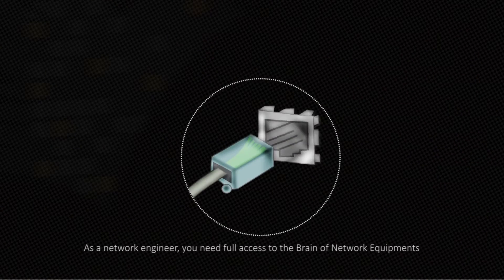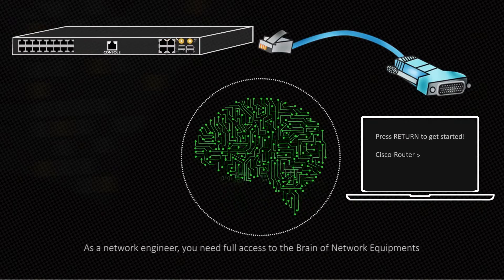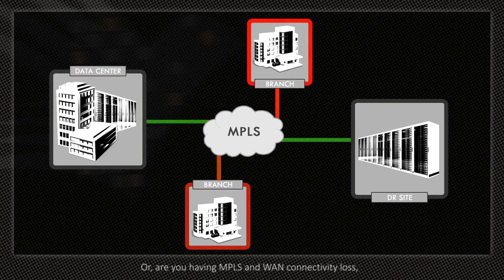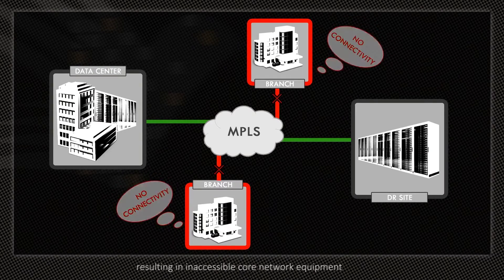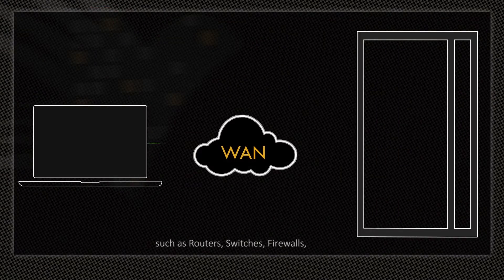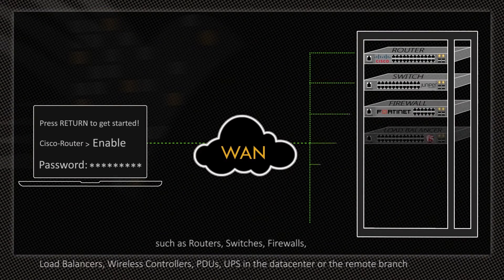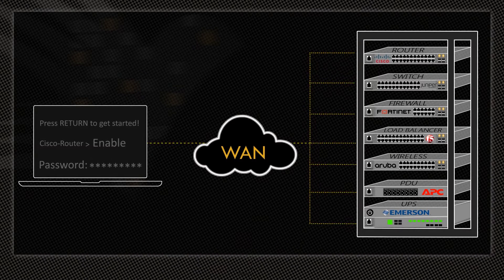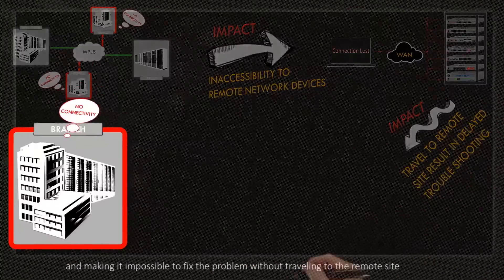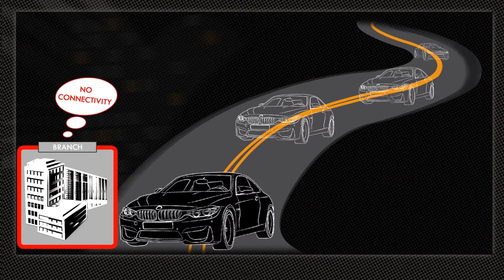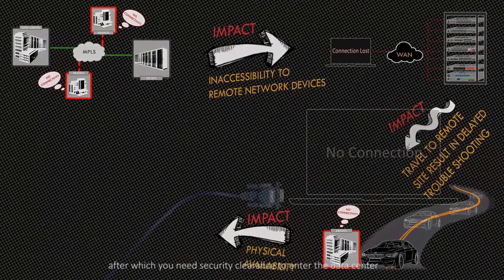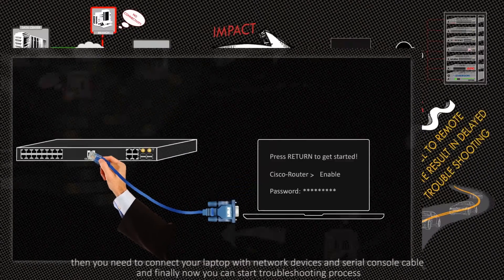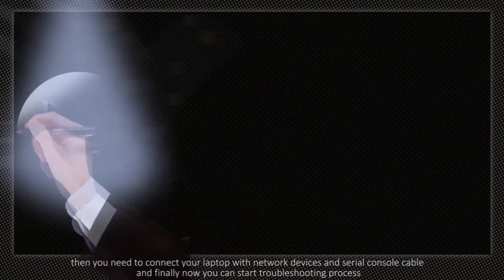As a network engineer, you need full access to the brain of network equipment, also known as serial console access. Or are you having MPLS and WAN connectivity loss, resulting in inaccessible core network equipment such as routers, switches, firewalls, load balancers, wireless controllers, PDUs, and UPS in the data center of a remote branch — making it impossible to fix the problem without traveling to the remote site, obtaining security clearance to enter the data center, connecting your laptop via serial console cable, and only then starting the troubleshooting process.